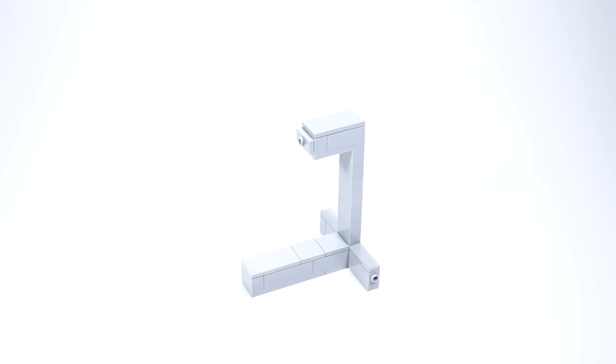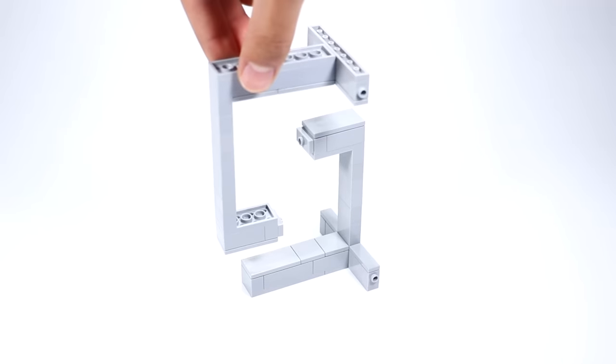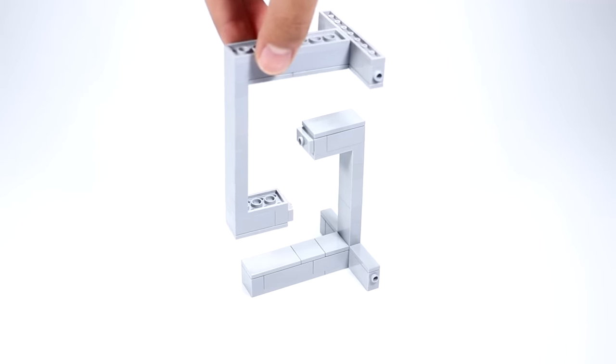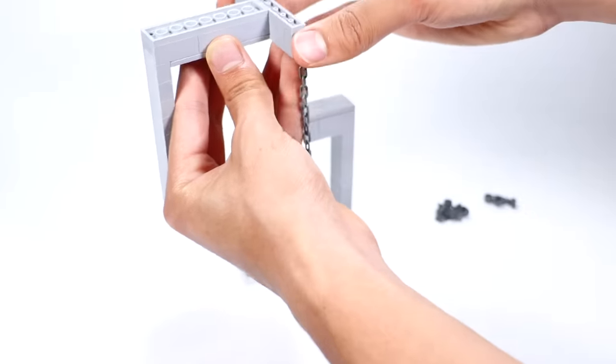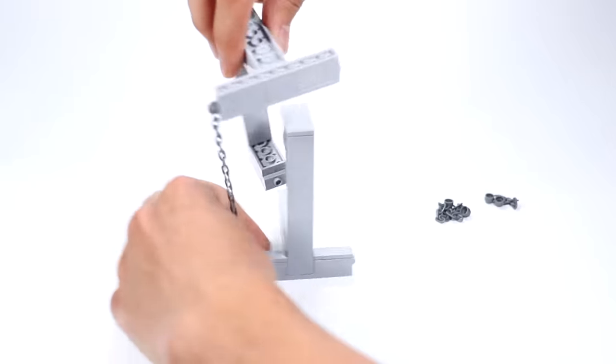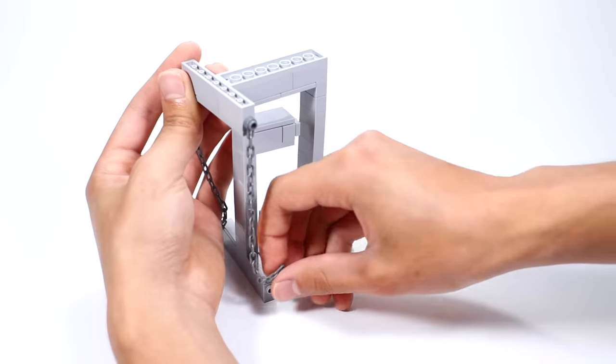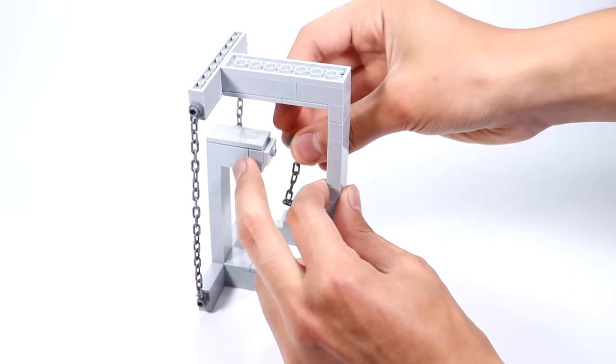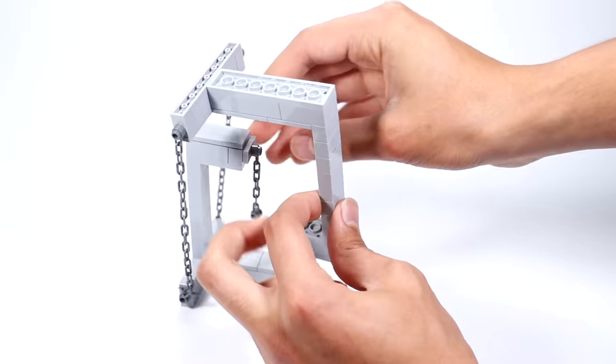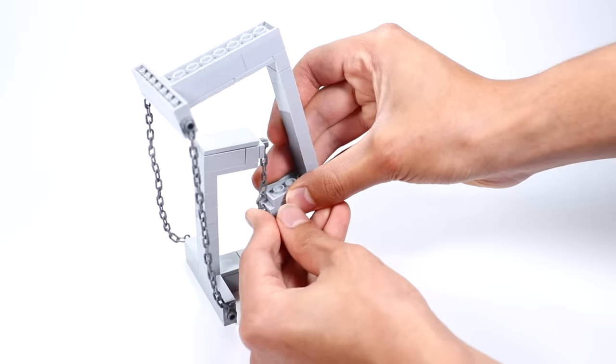So now what you're going to do is take your first assembly and have it straight up on the ground. And then you're going to take your second section and you're going to flip it upside down. And this is kind of the tedious part because here we have to connect the chains. So in terms of the longer chains, they're going to simply connect to the SNOT bricks which are facing outwards. And then our smaller chain is going to overhang from the first assembly down to the second assembly.